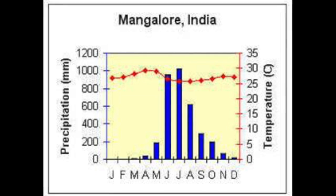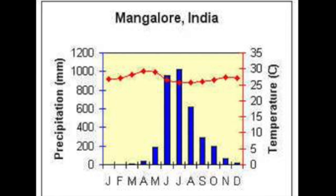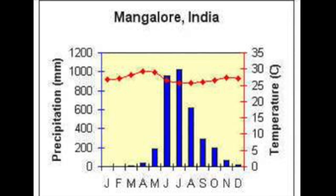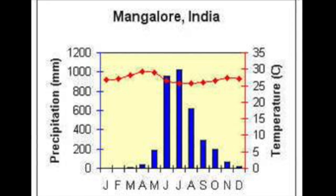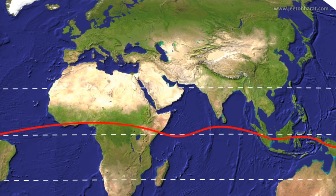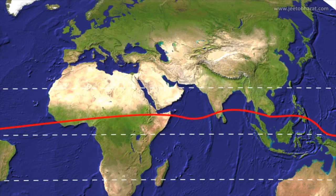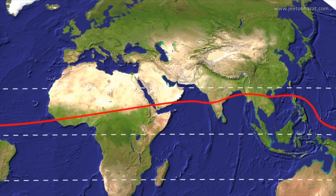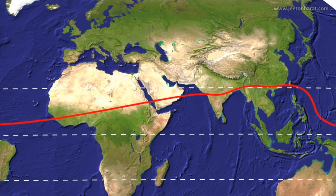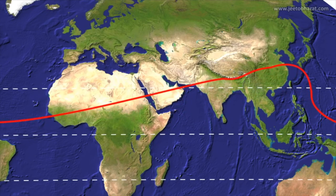Tropical deciduous forests experience 80-90% humidity throughout much of the year, and the average temperature is 30 degrees Celsius year-round. One of the most defining characteristics of monsoonal forests is their seasonality. As temperatures begin to warm, the intertropical convergence zone shifts, resulting in a period of high precipitation in those regions.